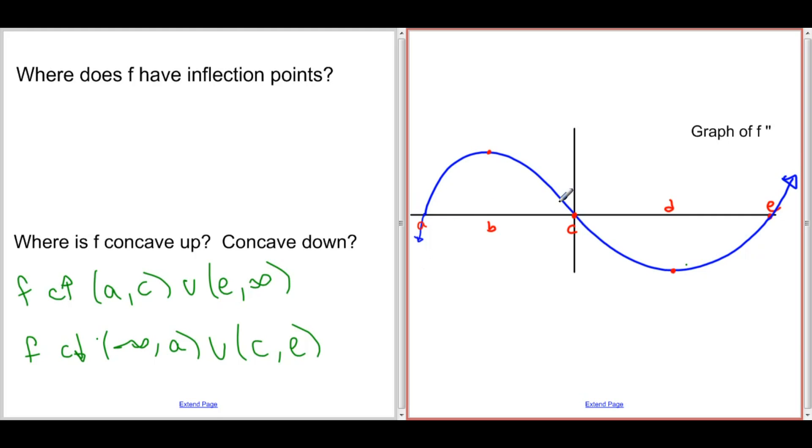This occurs at a, c, and at e. At a, f goes from concave down to concave up. At c, f goes from concave up to concave down. And at e, f goes from concave down to concave up.